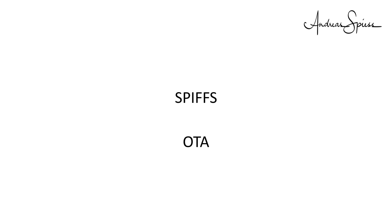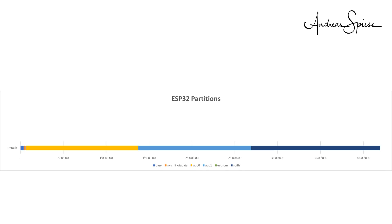The ESP32 splits its memory into partitions, like we partition our disks on the PC. Usually six partitions exist. They are called Base, NVS, OTA Data, App0, App1, EEPROM, and SPIFFS. If we look at the default configuration, we see that only App0, App1, and SPIFFS have a relevant size.